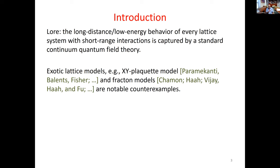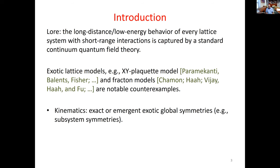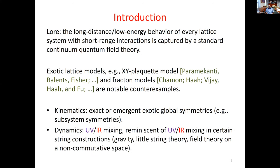Something so fundamental about quantum field theory is not understood here, and I think this should be pursued. These models have very peculiar kinematics — they have symmetries we have not seen before, called subsystem symmetries. These are global symmetries that do not act on all of space, but act on co-dimension one or co-dimension two of space. Unlike higher-form symmetries, these are not topological: we can move the subspace on which they act and the symmetry has a totally different effect. Dynamically, they exhibit UV-IR mixing, where the IR behavior is very sensitive to short-distance peculiarities.